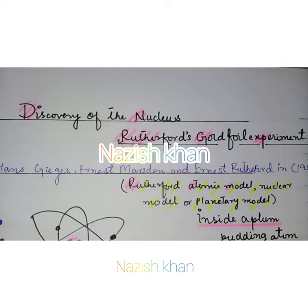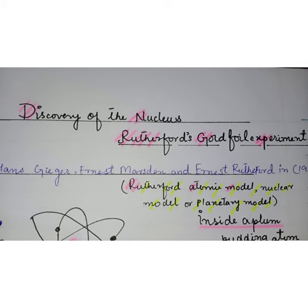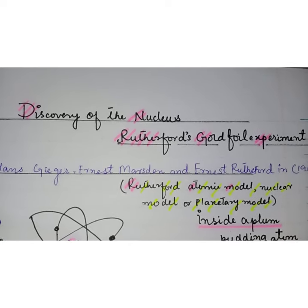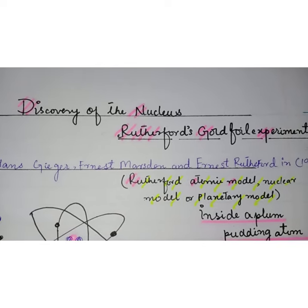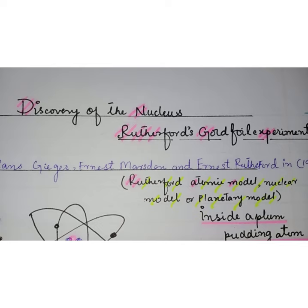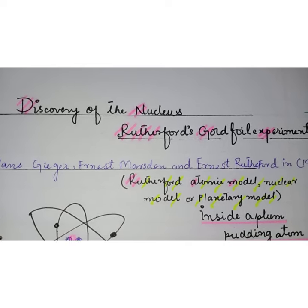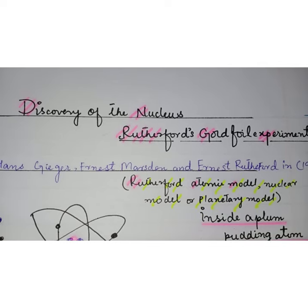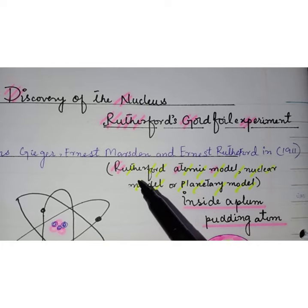In this video we are going to look at how scientists discovered that atoms have a nucleus in them. This discovery was made by a New Zealand-born scientist named Ernest Rutherford along with his colleagues in 1911 in their famous gold foil experiment.